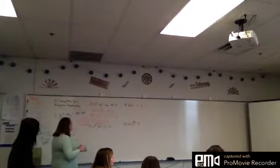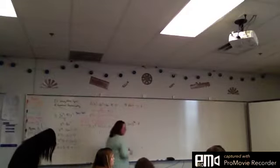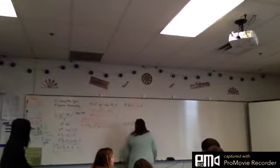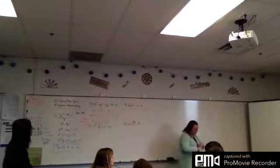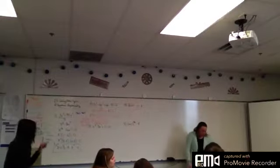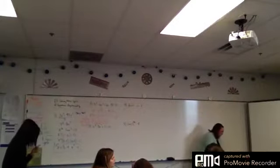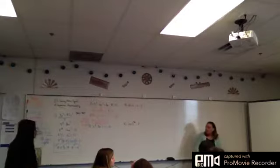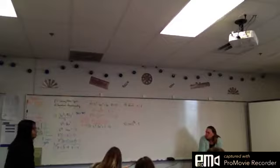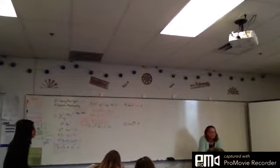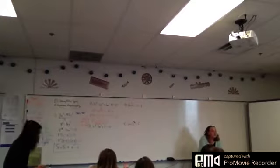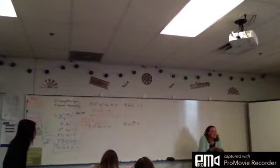On the next one, you have x to the 4th minus 3x squared plus 2. What do you think we're going to do? Winston wants us to say x squared minus 2, x squared minus 1 — because that's what you want us to do.